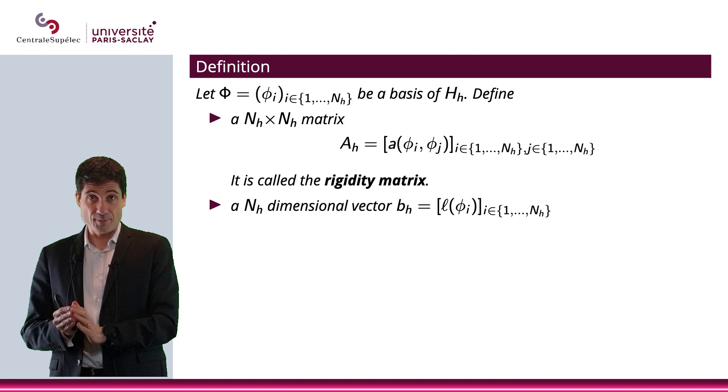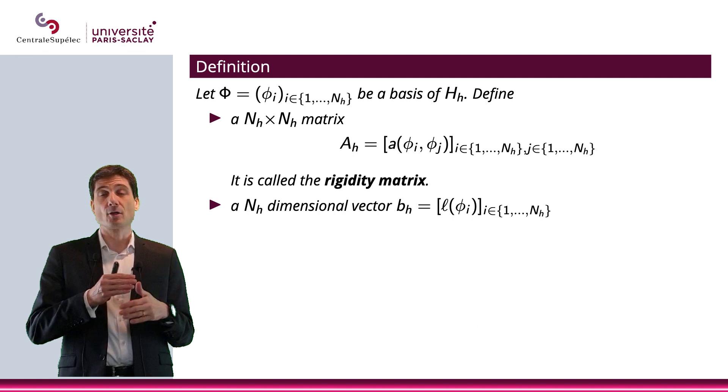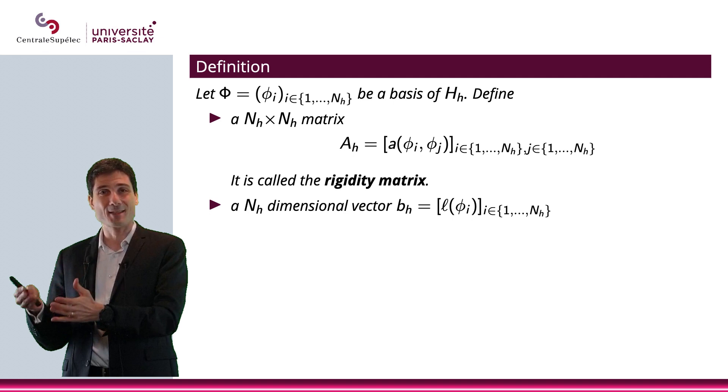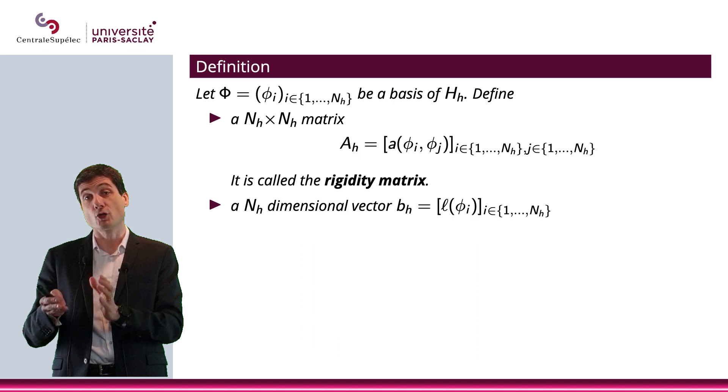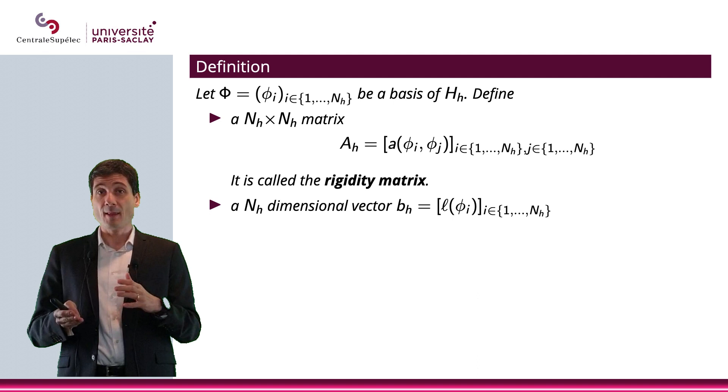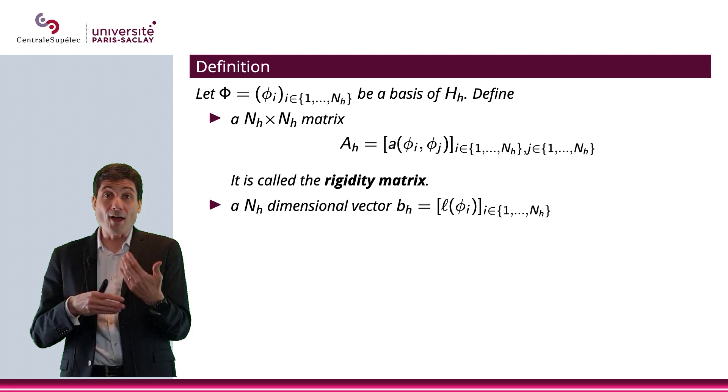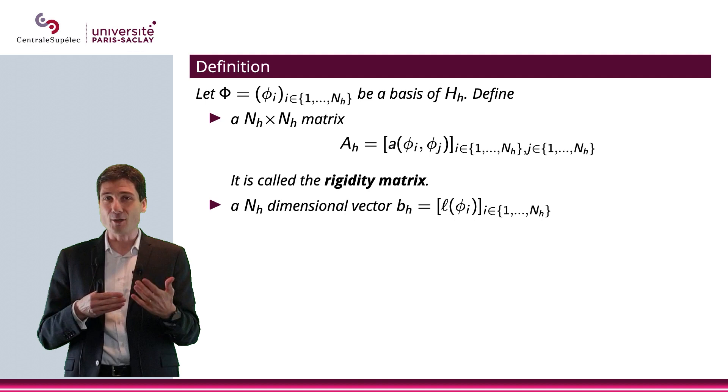Now, rigidity matrix comes from mechanical engineering, because when you do finite elements in some specific problems related to mechanical engineering, then this is a matrix that has something to do with the rigidity of the materials. This is why it is called a rigidity matrix. But the name rigidity matrix actually is used no matter what the problem is.